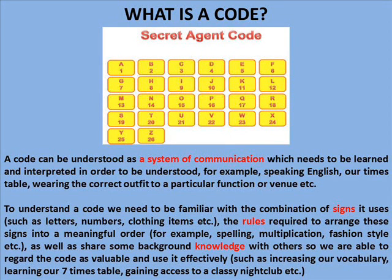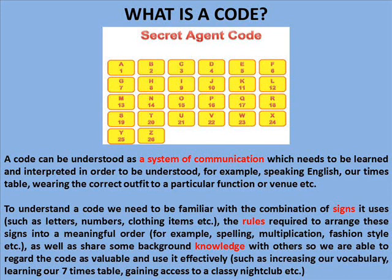To understand the code, we need to be familiar with the combination of signs it uses, such as letters, numbers, clothing items. The rules required to arrange these signs into a meaningful order — for example, spelling, multiplication, fashion style — as well as share some background knowledge with others so we are able to regard the code as valuable and use it effectively, such as increasing our vocabulary, learning our seven times table, or gaining access to a classic nightclub.